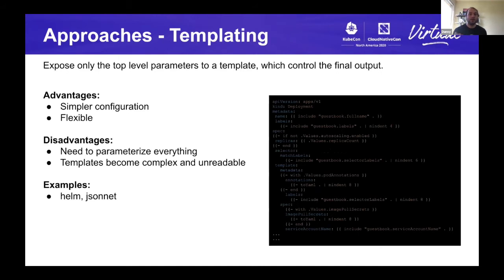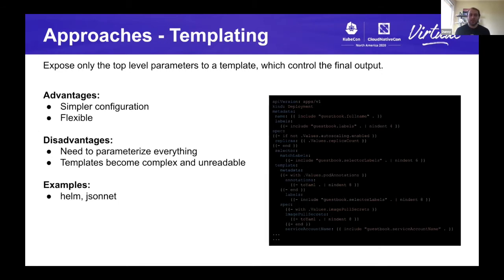Templating is where you take a list of parameters that you inject into a predefined template, and that output is your configuration. An example of this would be Helm. The image we have here is a Helm chart, and you'll notice it allows you to list different values that you can fill in via another file that the developer provides. The advantages are a simpler configuration and great flexibility — you might notice an if-statement within this deployment template. However, these templates tend to grow in complexity over time as you start to parameterize everything, making maintenance and comprehension really challenging.